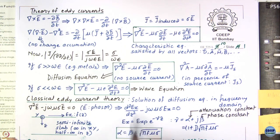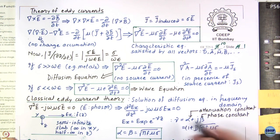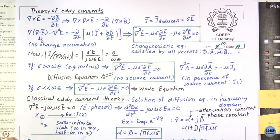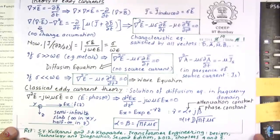When E is a function of z, the del-squared E reduces to d²Ex/dz² minus j·omega·mu·sigma·Ex = 0. The solution that satisfies this is Ex = Exp · e^(−gamma·z), where gamma is the propagation constant given by alpha plus j·beta; alpha is the attenuation constant and beta is the phase constant. Substituting back, alpha equals (1+j)·sqrt(pi·f·mu·sigma). The theory of eddy currents is available in many standard books.